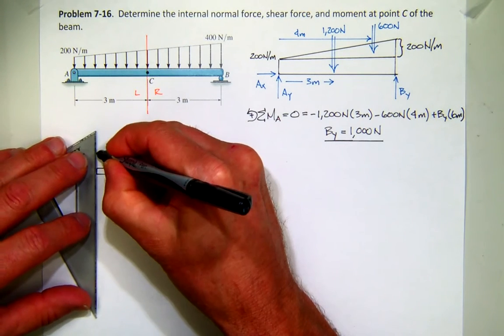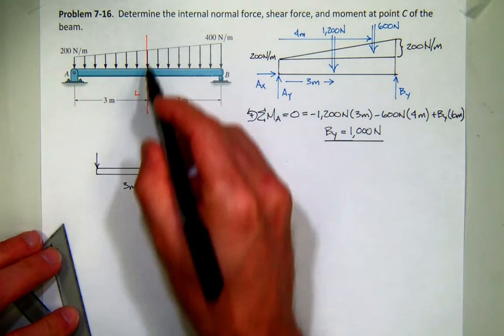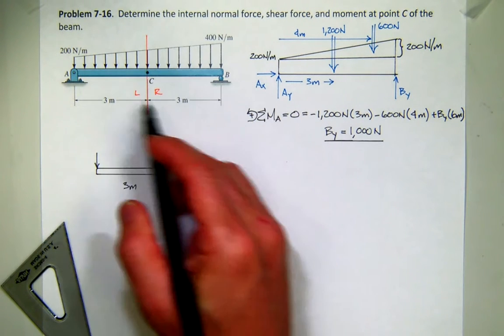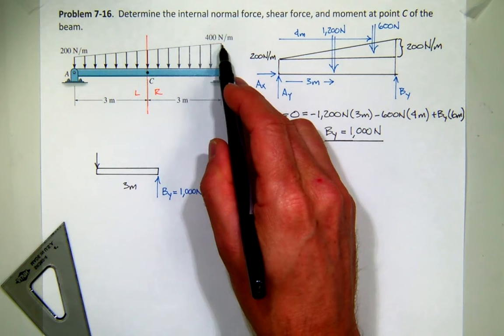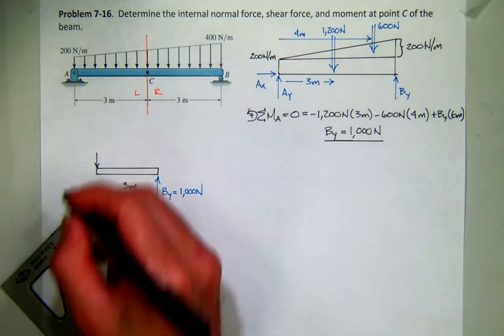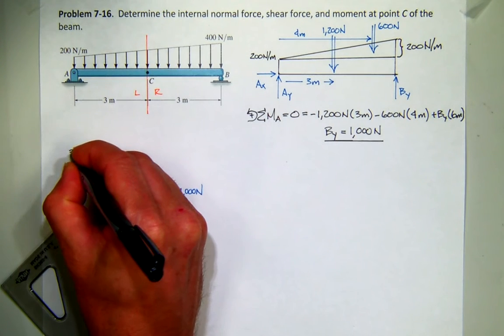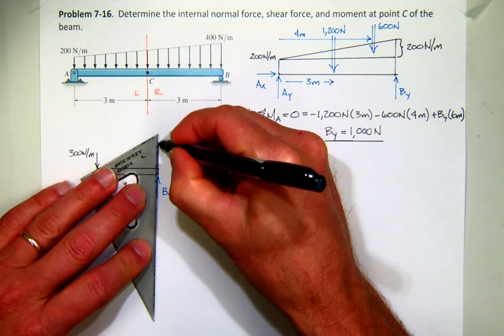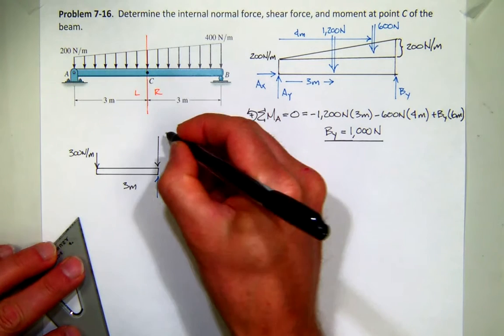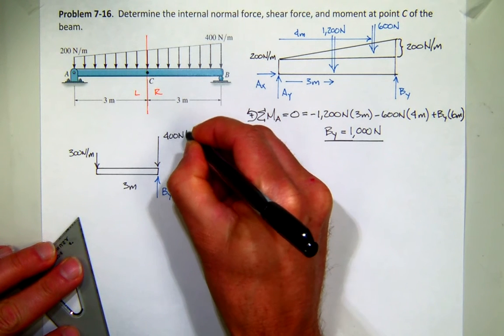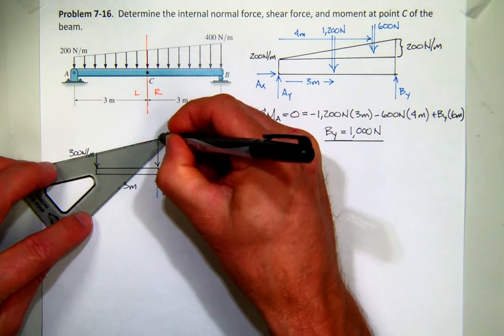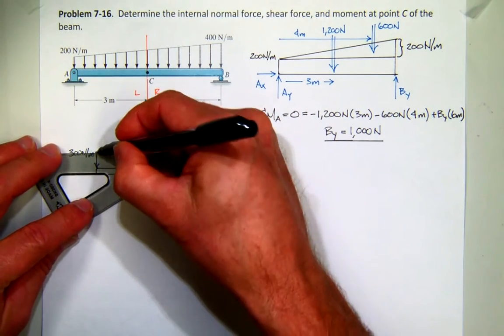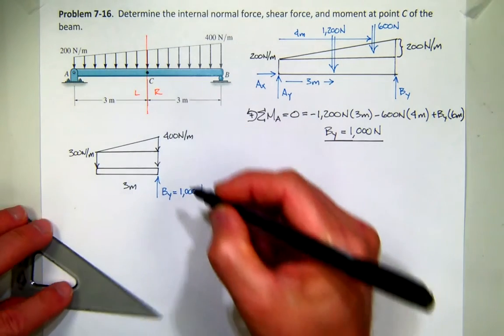There's my BY reaction, which I now know is 1,000. The length is 3 meters. Now, what is the intensity of the loading right here at C? It's right in the middle. So if you start off at 200 and you linearly vary to 400, what should the value be in the middle? 300. And it goes to intensity of 400.